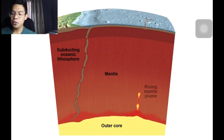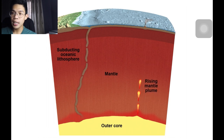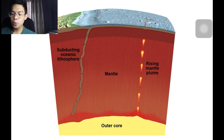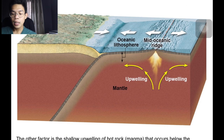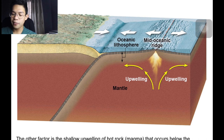Two main factors contribute to the upward part of the convective flow of the mantle. The first are hot, buoyant mantle plumes that rise from the outer core to Earth's surface, creating hot spots at the top — similar to what exists in the Hawaiian Islands. A mantle plume can also occur beneath the continents. The other factor is shallow upwelling of hot rock or magma that occurs below the oceanic ridge crest. As the plates spread apart, fractures in the oceanic crust fill with molten rock rising from the mantle, which cools to produce new seafloor in a process called seafloor spreading.